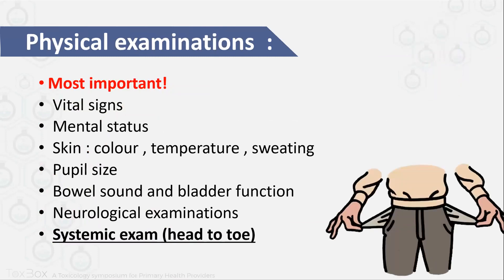For physical examination, within 30 seconds you must get vital signs, mental status, skin color, temperature, sweating, pupil size, bowel and bladder function, and some neurological examination. After you finish this, if your patient is stable and you have already supported them, you can do a systemic head-to-toe exam. Don't forget to check your patient's pockets — you will get some hints there.